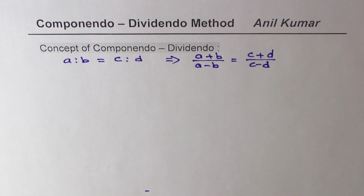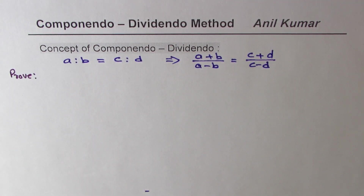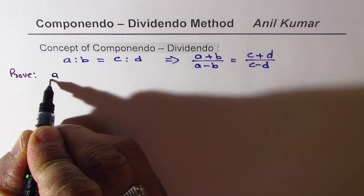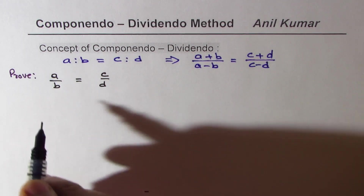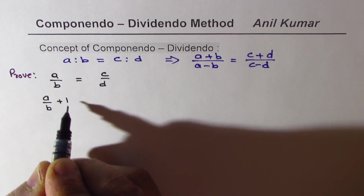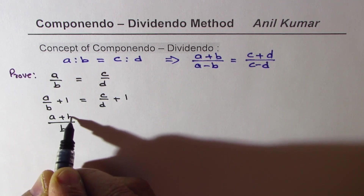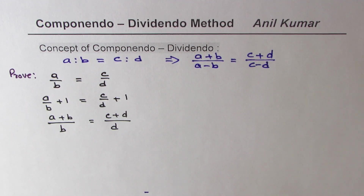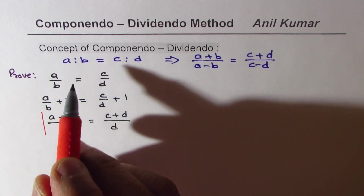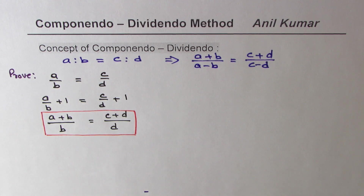Let's take up the proof first. When I write a is to b equals to c is to d, in ratios I can write this as a over b equals to c over d. Now, if I add 1 on both sides, that is a over b plus 1 equals c over d plus 1. Taking common denominators, we get a plus b over b equals c plus d over d. So if a is to b equals to c is to d, then a plus b over b is also equal to c plus d over d.